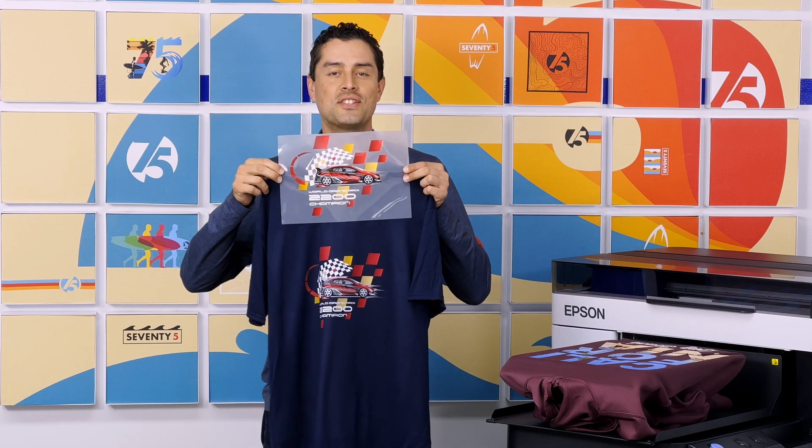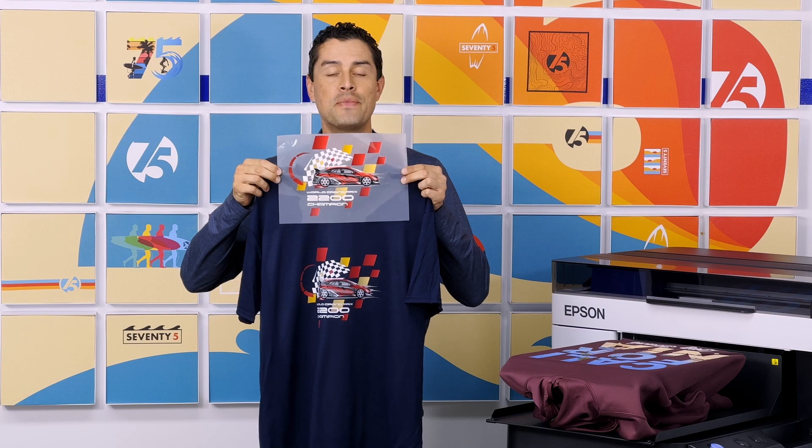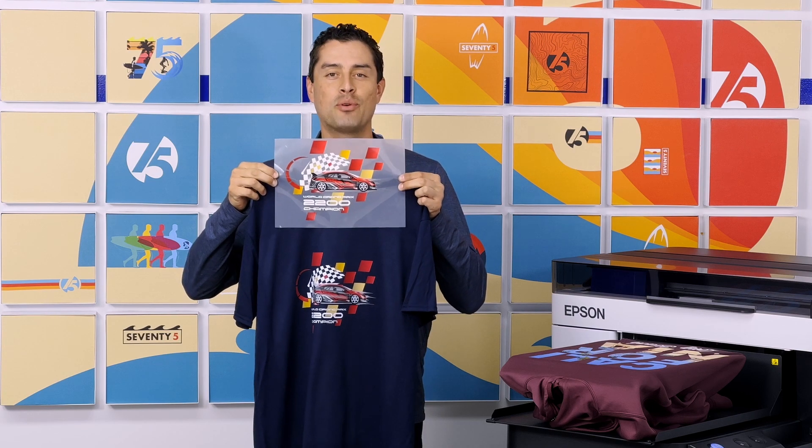And that's how easy it is to get your design onto a garment using digital transfer film and the Epson SureColor F2270 Hybrid Printer.